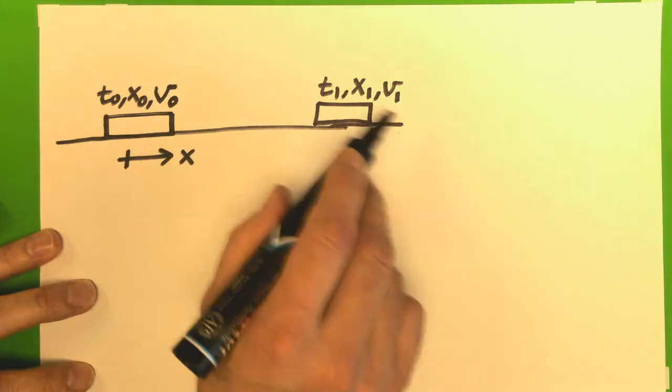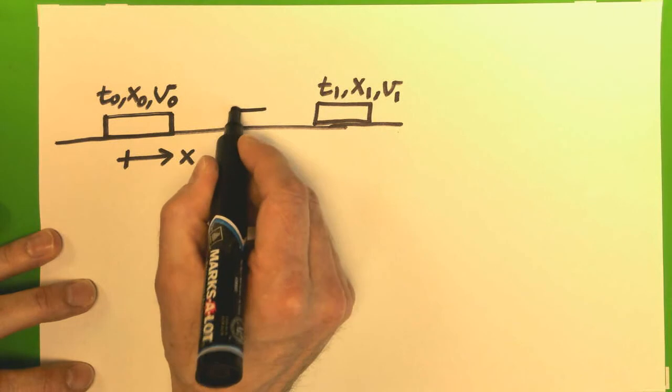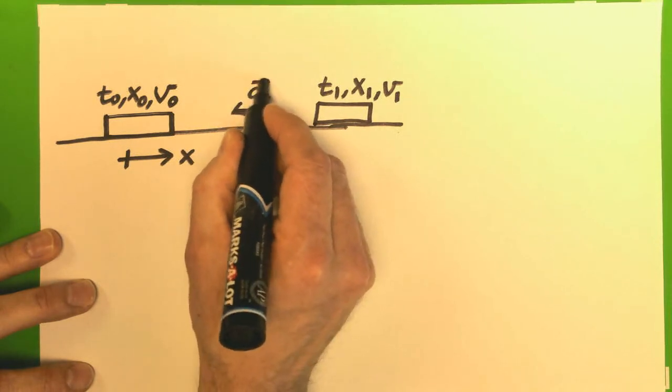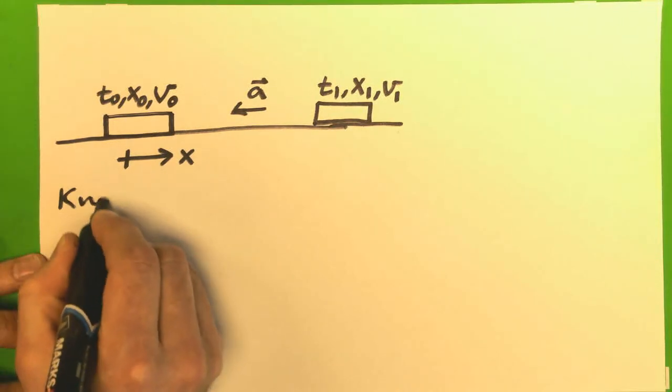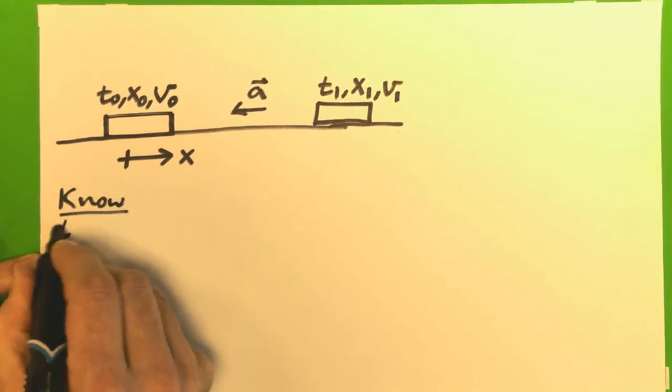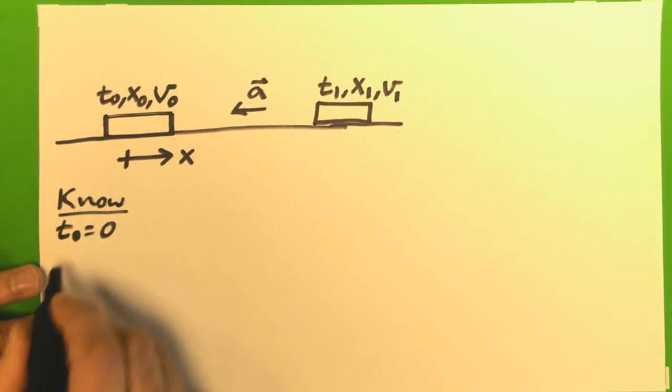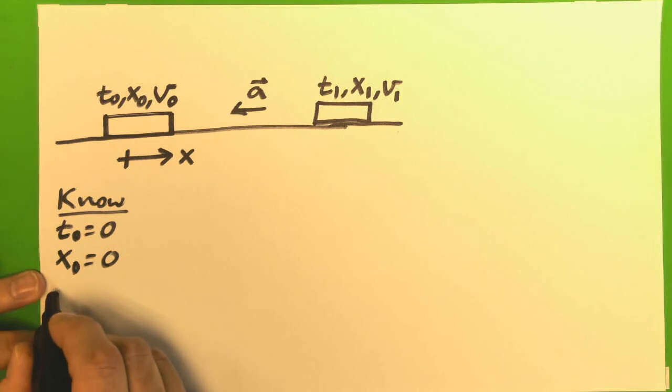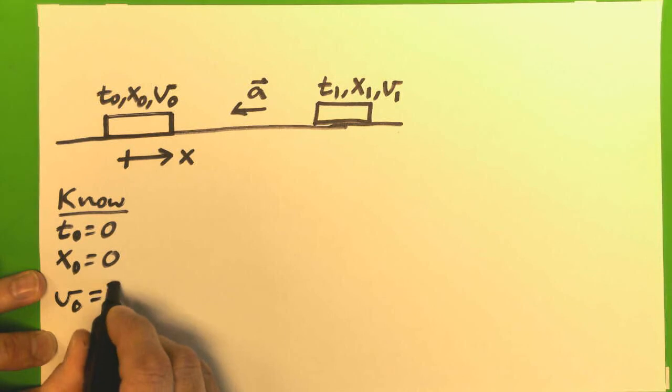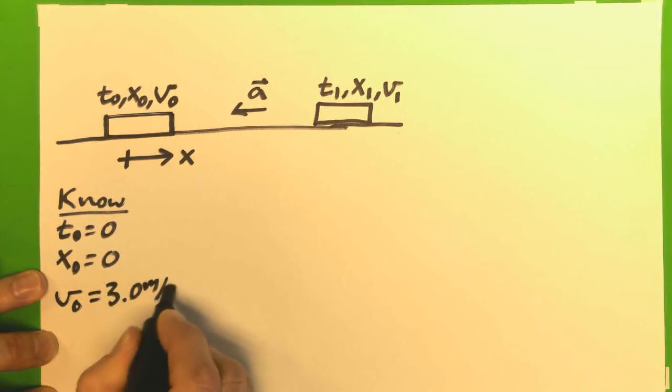As it's slowing down, velocity is this way, we know that the acceleration would be this way, and I can start listing things that I know. Suppose I know, as always, I can choose my time to start at zero, my coordinate system says my position starts at zero, and let's say the kick, as soon as it leaves my foot, is traveling at 3 meters per second.